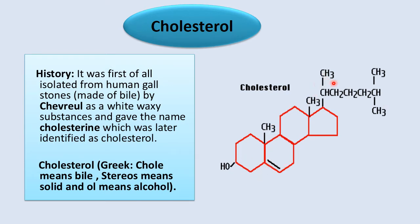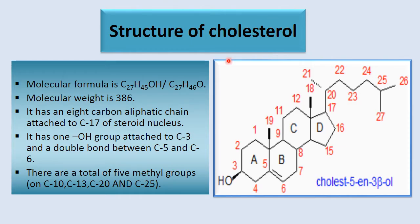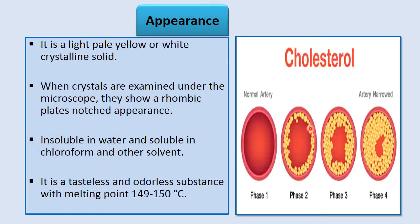The structure of cholesterol has 27 carbons, one OH group, one double bond, many methyl groups, and a side chain. The molecular weight is 386. It has an eight-carbon aliphatic chain from carbon 17, one OH group at the third carbon, one double bond between the fifth and sixth carbon, and five methyl groups.